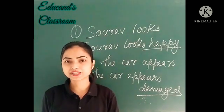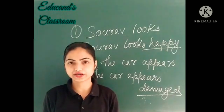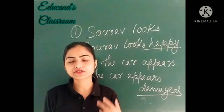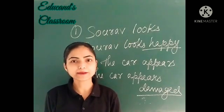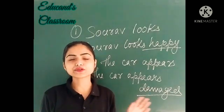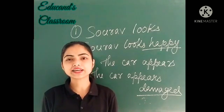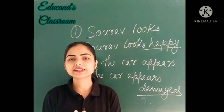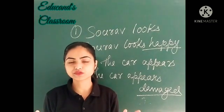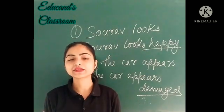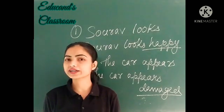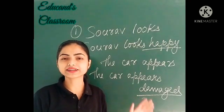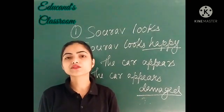Jho intransitive, transitive tha, uska difference tha based on object. Yaha peh transitive mein ek object hoota hai. Lekin intransitive or transitive — douno sentences meaningful hai. Lekin complete or incomplete ke case mein kya ho raha hai? Yaha peh compliment hai. Compliment aisate ke word hootai hai jho sentence ko complete kartay hai, jho sentence ko meaningful banate hai. Without compliment kya ho jayega? Sentence incomplete hooga. Ishi liye incomplete verb ke case mein, woh sentence ko incomplete banaata hai.